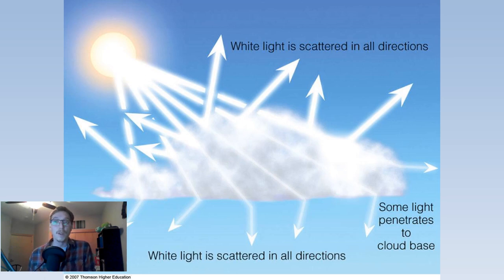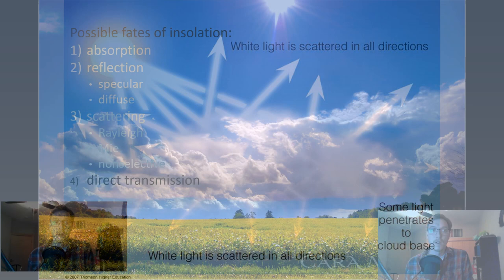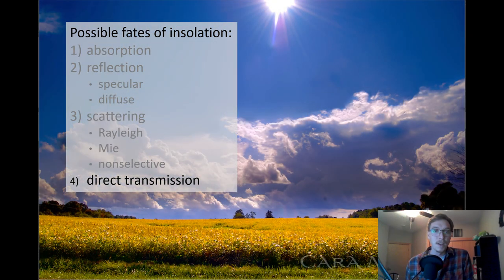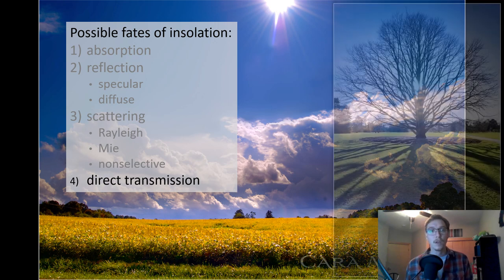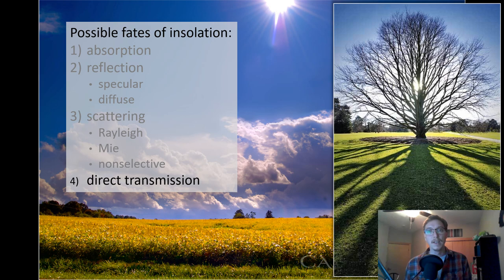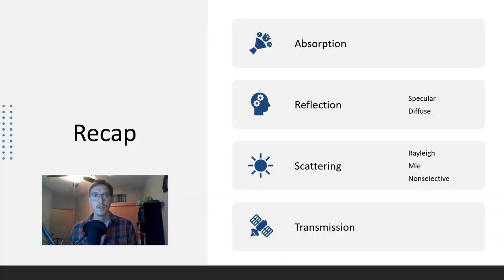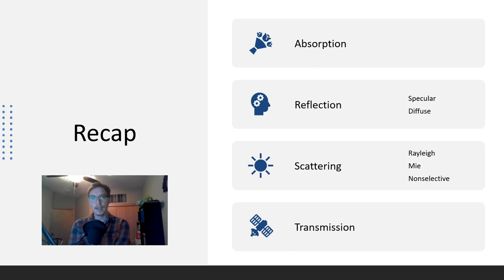Direct transmission means that radiation comes down through the atmosphere and is transmitted to the surface. Obviously if things get in the way, like a tree, you have shading, but the light is still getting through to the surface. So in this lecture we talked about absorption, reflection, scattering, and transmission. We've got a couple more lectures to go in the energy and heat series — I will see you in the next video.